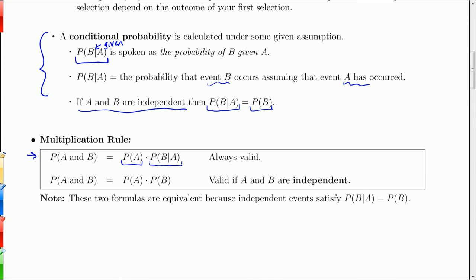If the events are independent, the probability of A and B is just the product of the two probabilities — we don't have to worry about that conditional probability. These are the same because if two events are independent, the probability of B given A equals the probability of B.